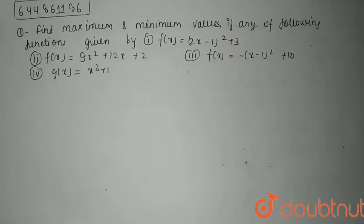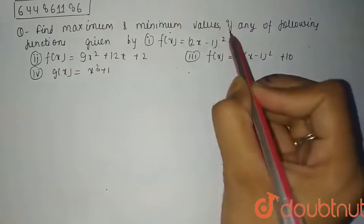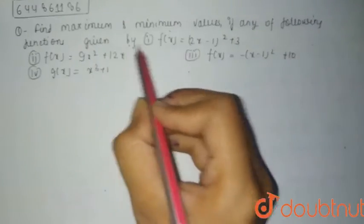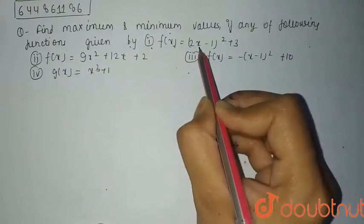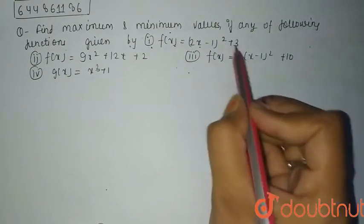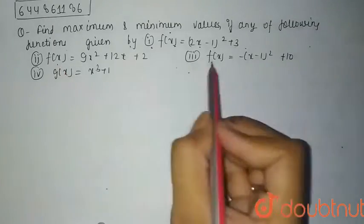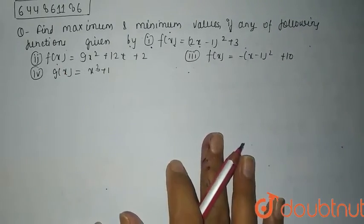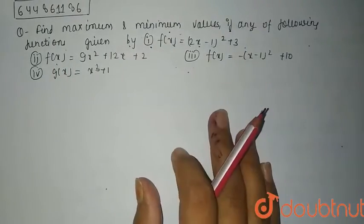Hello students. Today's question is: find maximum and minimum values, if any, of the following functions. The first is f(x) = (2x - 1)² + 3. Similarly, second, third and fourth functions are given and we need to find their maximum and minimum values.